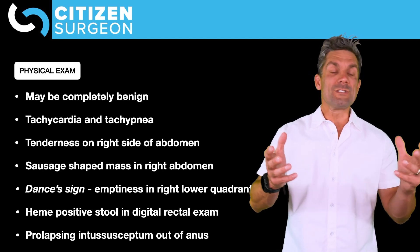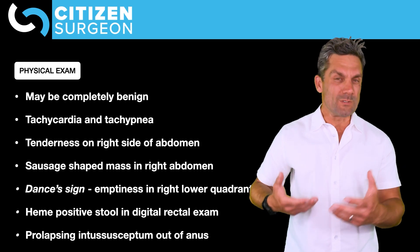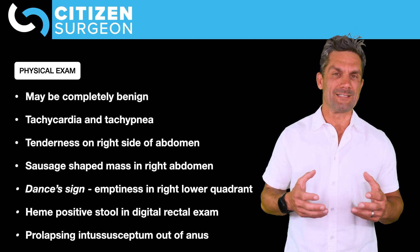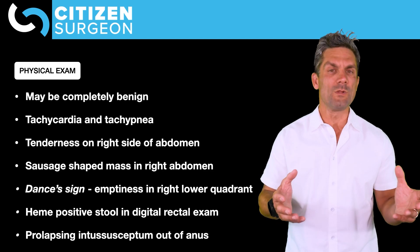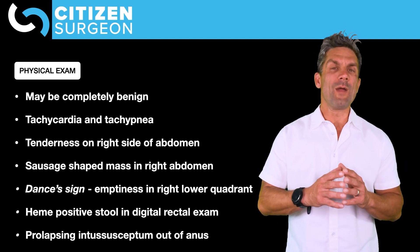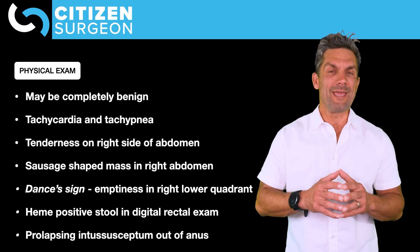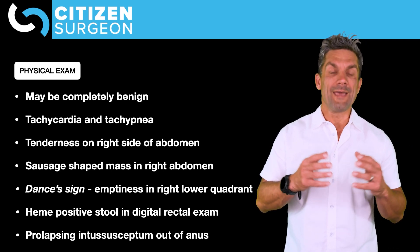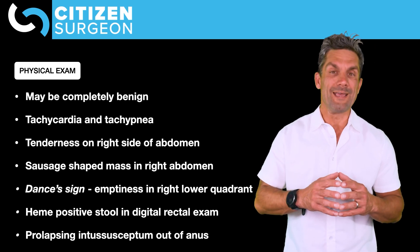Surgeons love to ask about eponyms. Dance's sign is a retraction or emptiness in the right lower quadrant because of the intussusception. You also want to examine the stool for currant jelly. Do a rectal exam — not necessarily a digital rectal exam, but inspect the perineum and anus to make sure you don't have intussusception prolapsing out of the anus, which is definitely possible in very progressive intussusception.